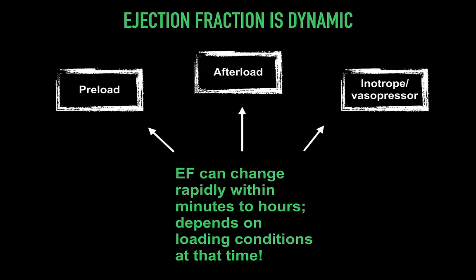Ejection fraction is dynamic. It regulates its function based on different loading conditions at that point in time, and this really needs to be considered in the clinical context. Factors that influence EF include inotrope or vasopressor dose, blood pressure, degree of vasodilation or afterload, such as would be seen in valve stenosis or regurgitation. Knowing that when any of these change, the function — most often denoted by ejection fraction — will often change. Changes in contractility can also occur with stressors such as a myocardial insult during sepsis, ischemia, or stress.